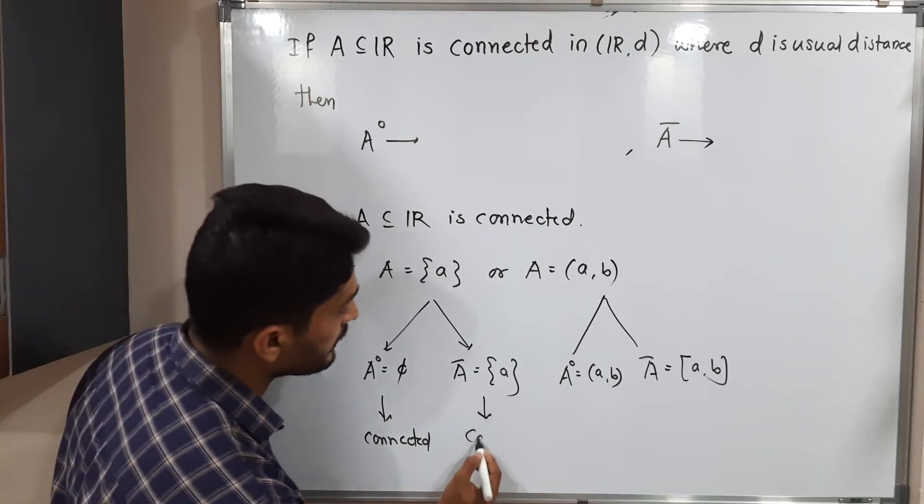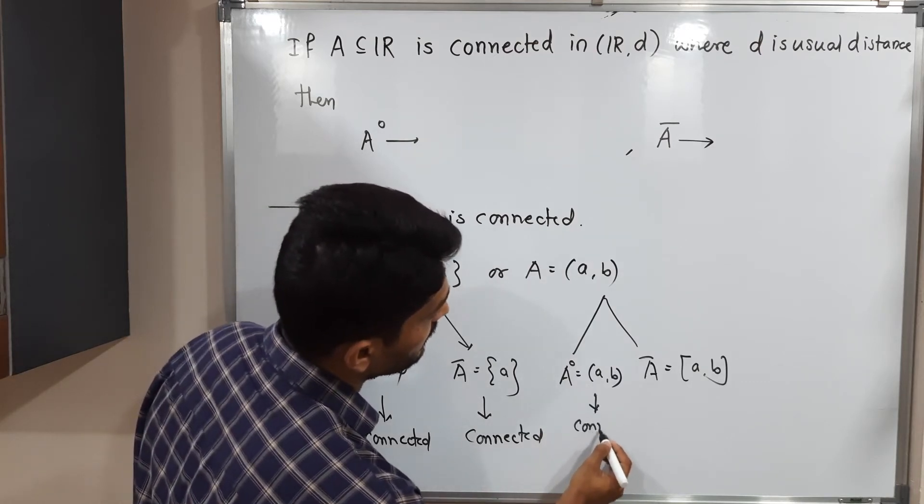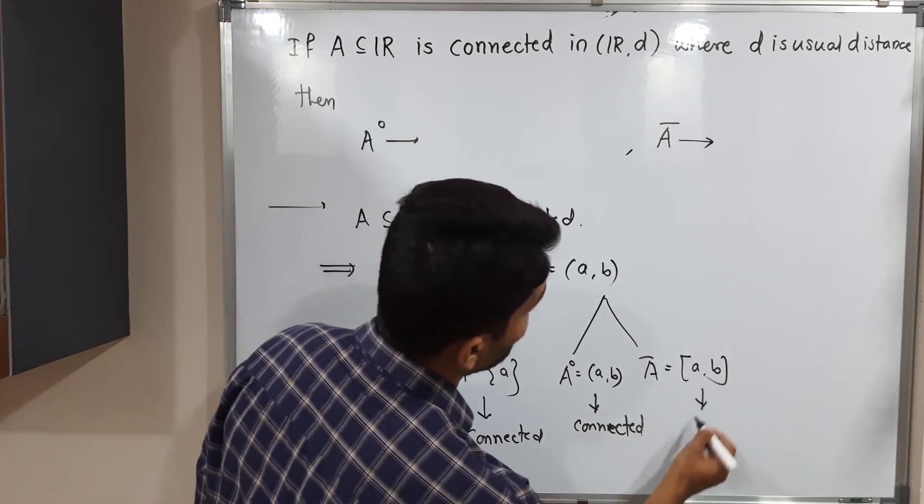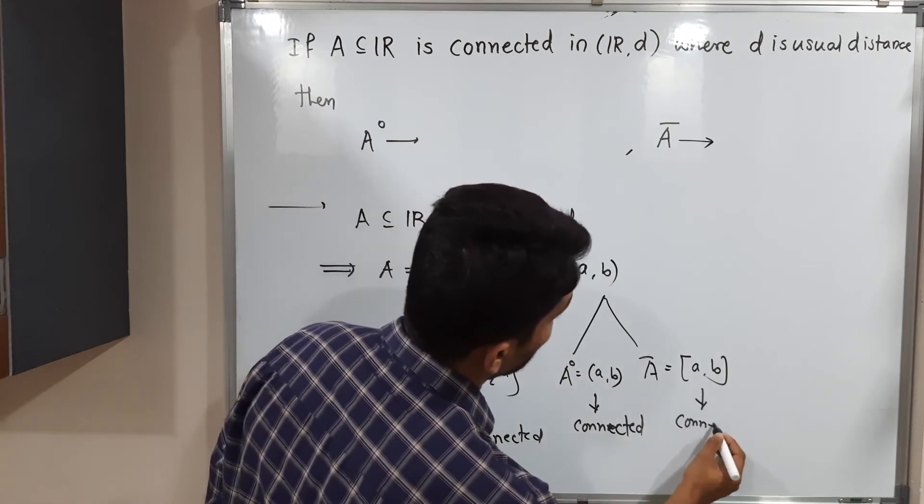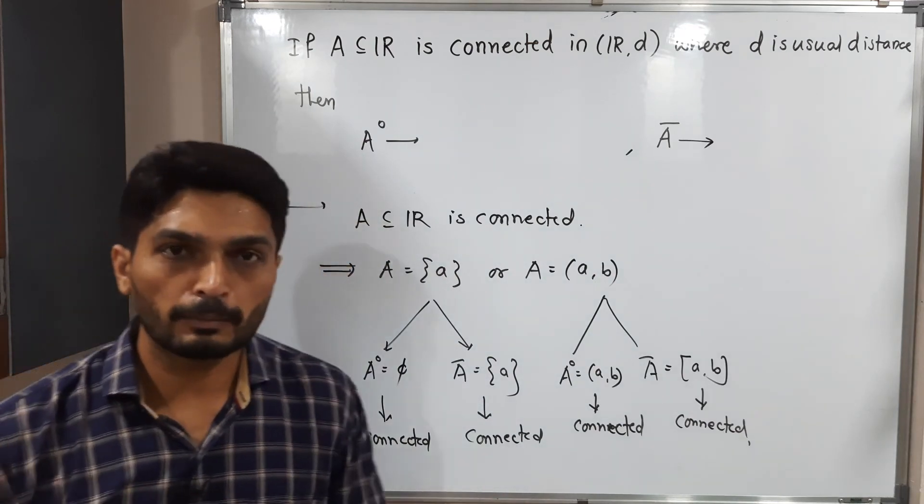Singleton set is connected in R, we know that. Open interval is connected since we know that every interval is a connected set in R. Closed interval is also connected. So that means in both cases we get A° and A̅ are connected.